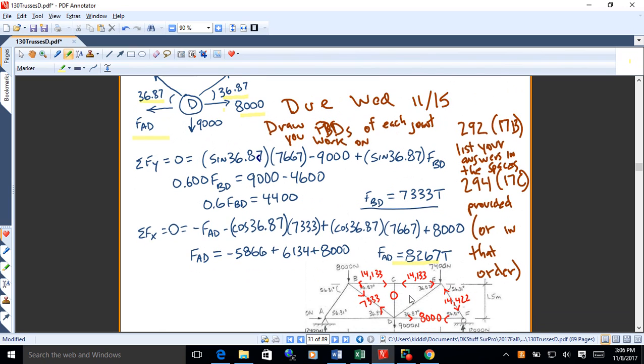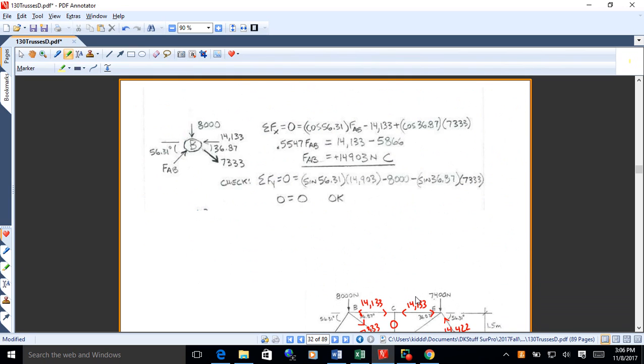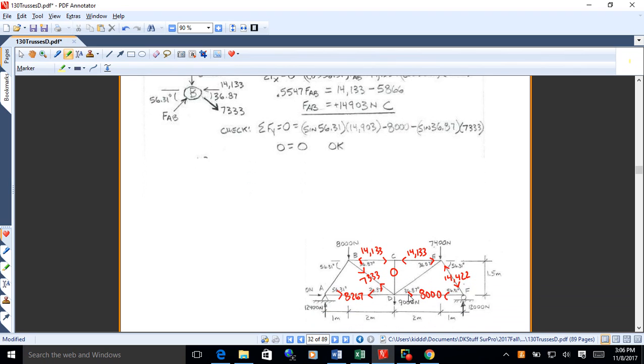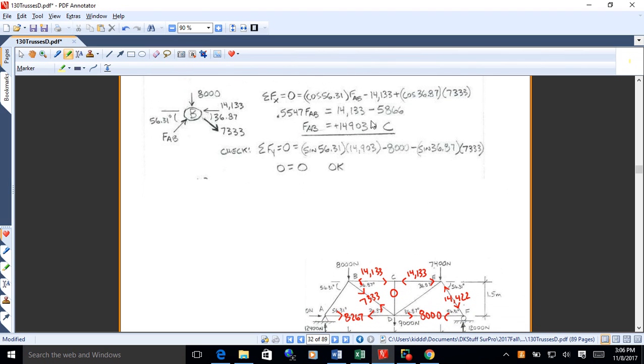So that's how you work through these joints problems. To finish this one up, I might go up to joint B. Get my free body diagram there. The unknown is just FAB now. That's the only one I've got. So I'll go sum of FX. I'll get cosine 56.31 FAB minus 14133 plus cosine 36.87 times 7333. I'll solve for FAB. It's positive 14903, which means the positive means it does act upright as I assumed.